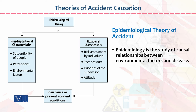If we look at the theory of accident causation diagrammatically, within the epidemic theory there are predispositional characteristics and situational characteristics. There is a difference between these two. Predispositional characteristics include susceptibility of people, perception of people — how they perceive something — and environmental factors, which are not in your control.